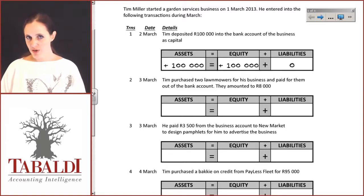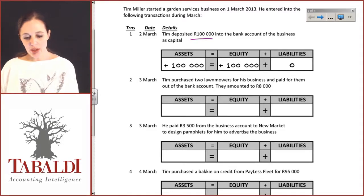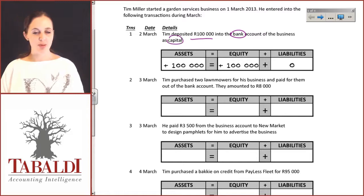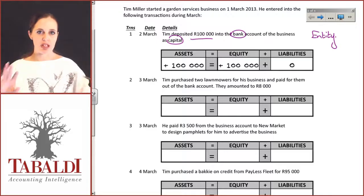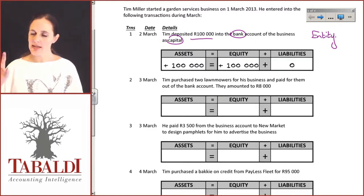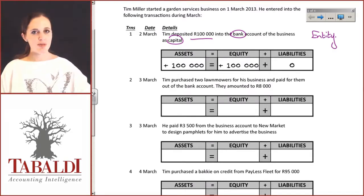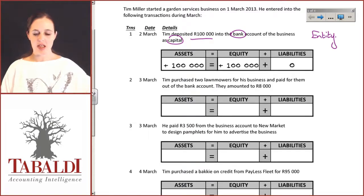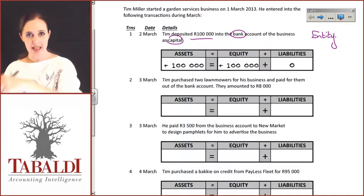Tim started a garden service business on the 1st of March 2013. On the 2nd of March, he deposited R100,000 into the bank account of the business as capital. An entity is separable from the individual — it has a separate set of financials and a separate bank account. Whatever happens in Tim's personal life is irrelevant to the business. The business is only impacted if Tim takes money out of or puts money into the business.